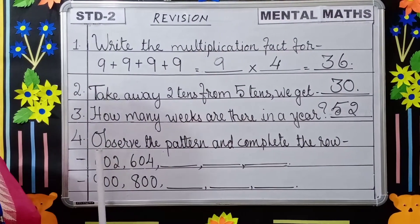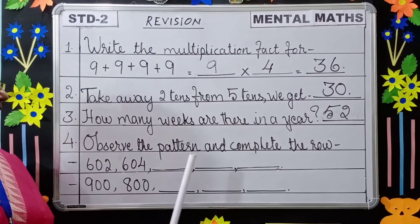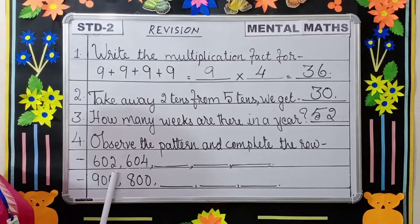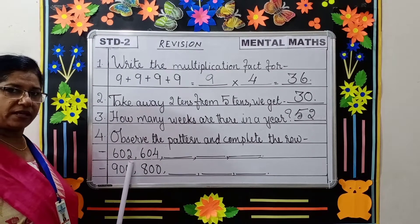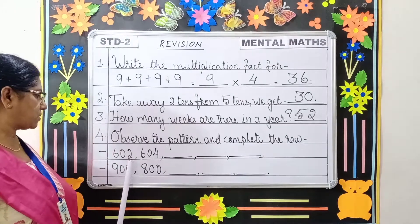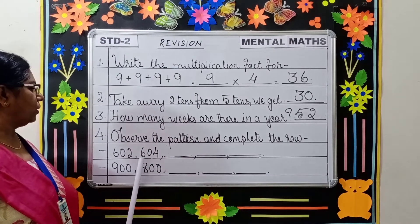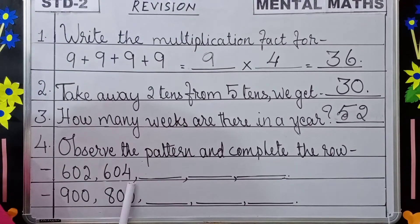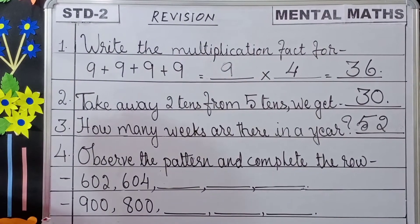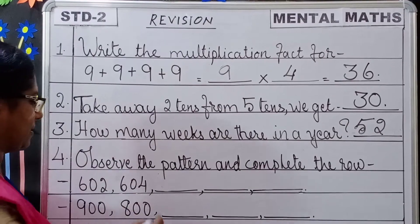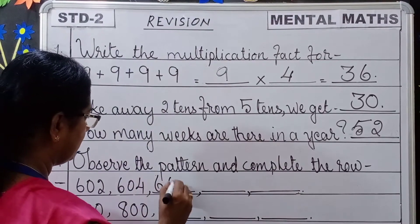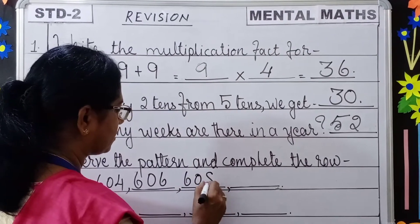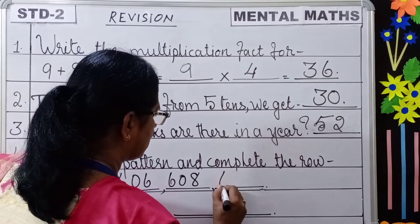Next question: Observe the pattern and complete the row. You have to find out the difference between the given numbers — 602 and 604. What is the number jumping? 2 each. So you will add 2 for the next digit: 606, then 608, then 610.